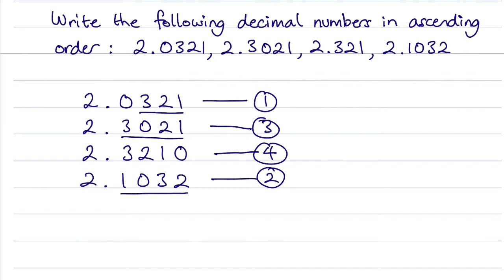So what we're going to have is 2.0321, and then 2.1032, 2.3021, and then 2.321.